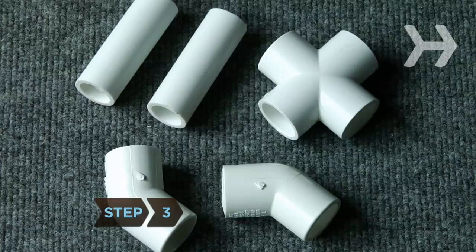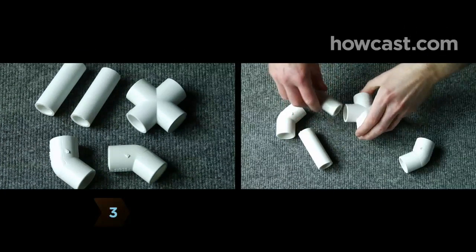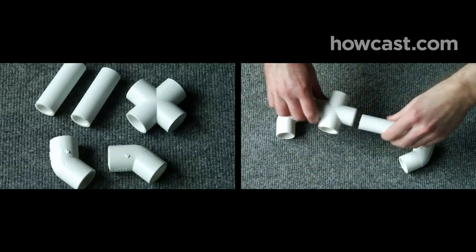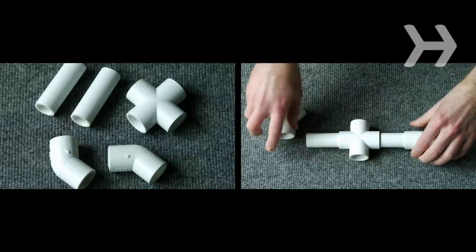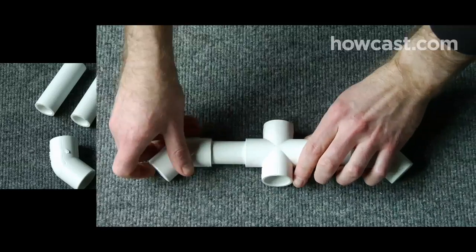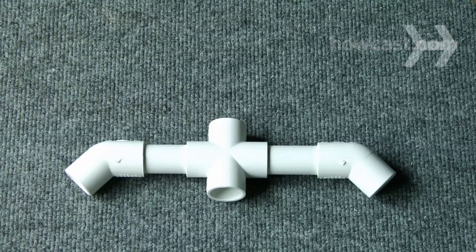Step 3. Separately, affix the two 3-inch pieces of PVC to opposite ends of the 4-way cross connector. Attach an elbow to the open end of each 3-inch piece. This assembly will serve as your camera's base.